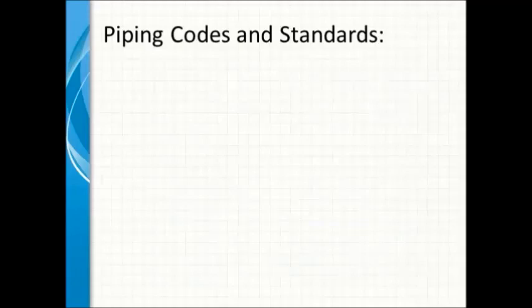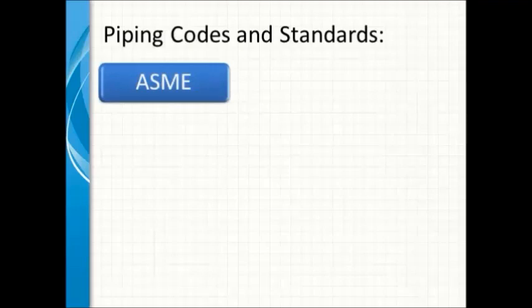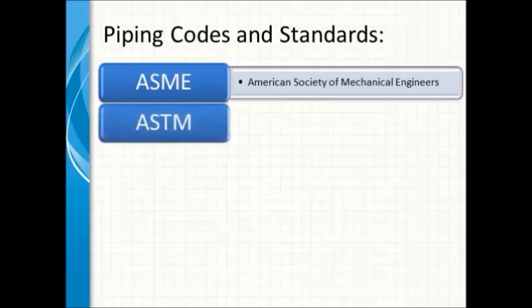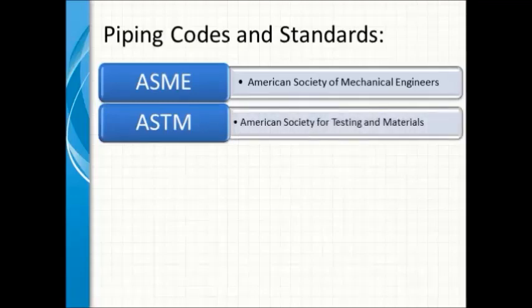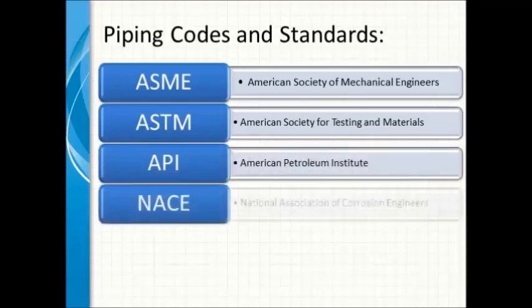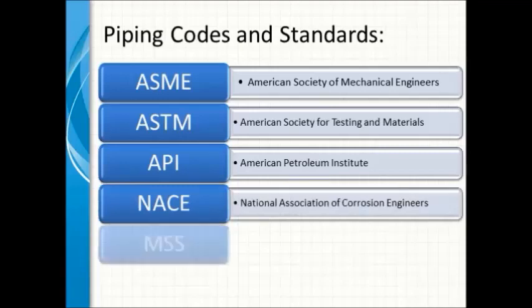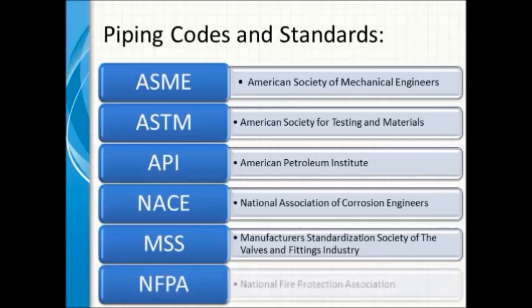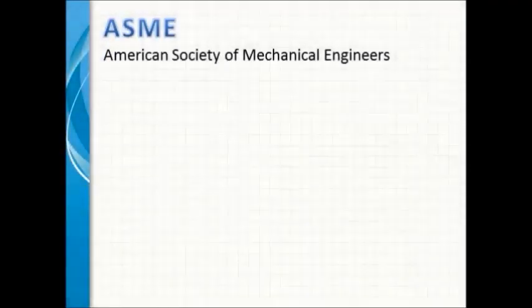Now, what are the most common codes and standards used in piping? The most important ones are: ASME (American Society of Mechanical Engineers), ASTM (American Society for Testing and Materials), API (American Petroleum Institute), NACE (National Association of Corrosion Engineers), MSS (Manufacturers Standardization Society of the Valves and Fittings Industry), and NFPA (National Fire Protection Association).